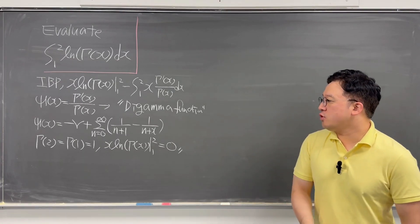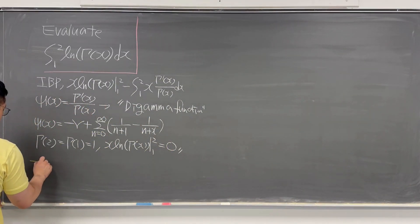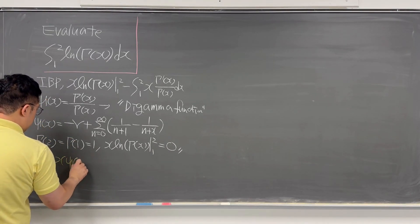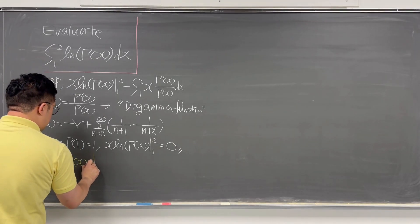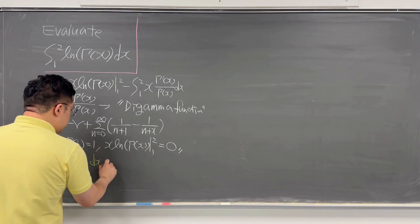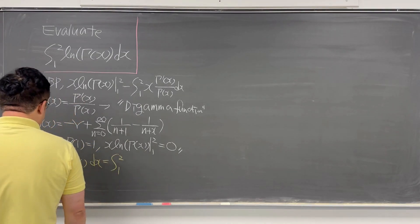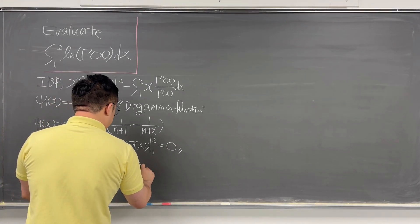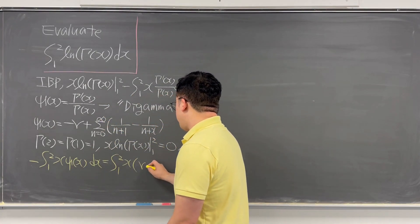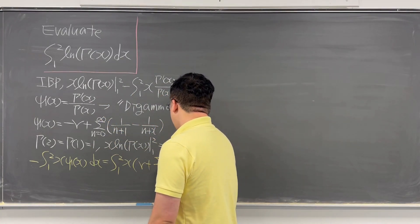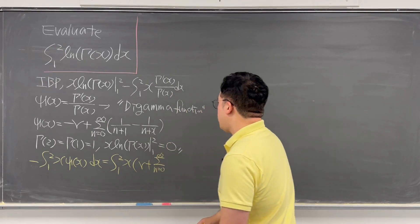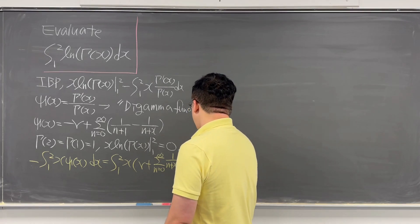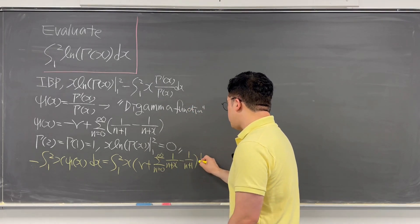So what we need to evaluate reduces to the negative integral from 1 to 2 of x·ψ(x) dx. Substituting the series representation for ψ(x), the integral becomes the integral from 1 to 2 of x times [−γ plus the summation from n=0 to infinity of (1/(n+x) − 1/(n+1))] dx.